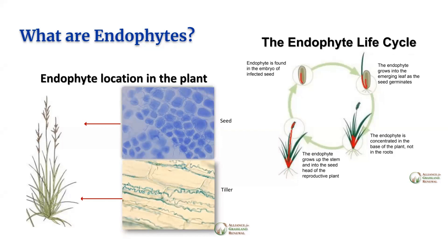This diagram shows where the endophyte can be found inside the tall fescue plant. The tillers, or bases of the stems, and the seed heads have the highest concentration of toxins. Therefore, timely mowing and not grazing closer than three inches are important if you have tall fescue in your pastures. Fortunately, the leaves have lower concentrations of toxins, but they can still impact animal health.